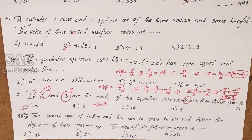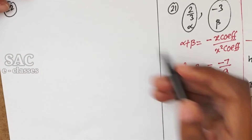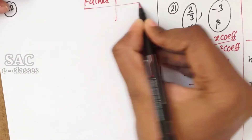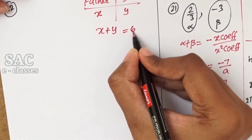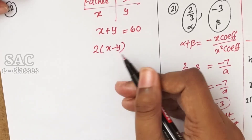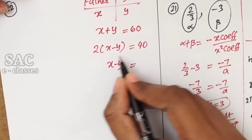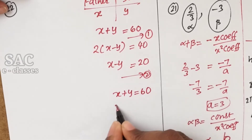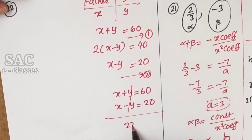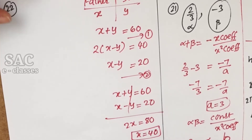Problem 22: the sum of ages of a father and son is 60 and twice the difference of their ages is 40. Let their ages be x and y. Then x + y = 60 and 2(x − y) = 40, so x − y = 20. Solving: 2x = 80, x = 40. The father's present age is 40 years. Option 3.